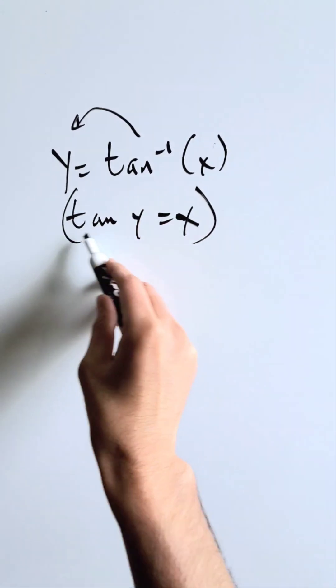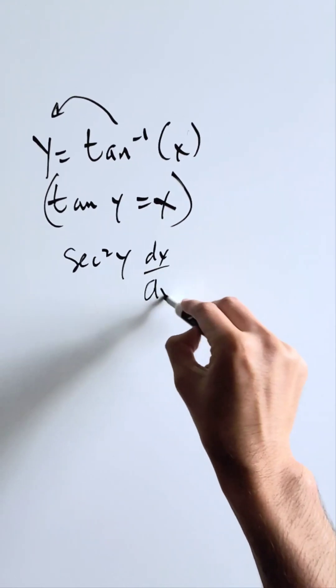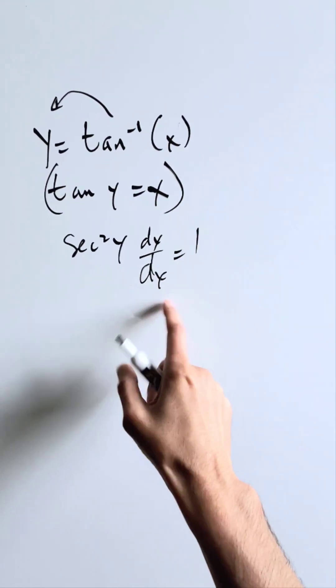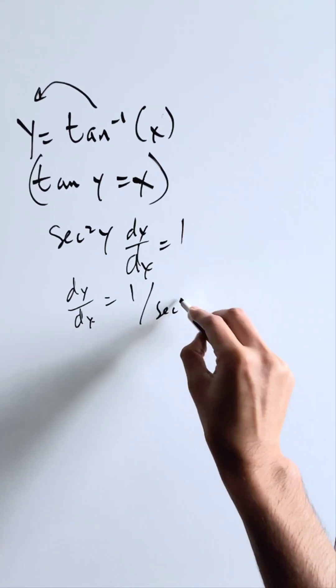Do the derivative of this expression. I have here secant squared y dy over dx is equal to 1. Solve for this: dy over dx is equal to 1 divided by secant squared y.